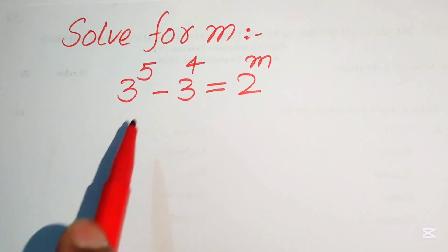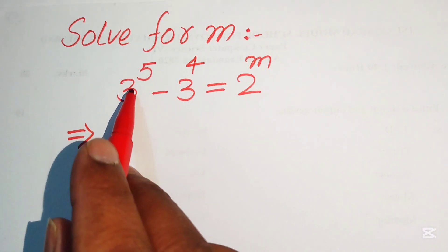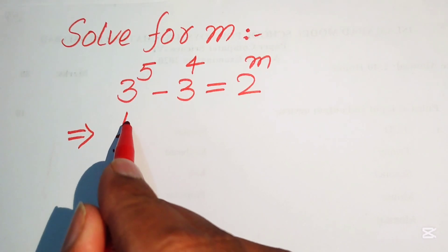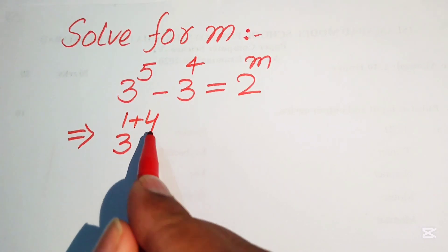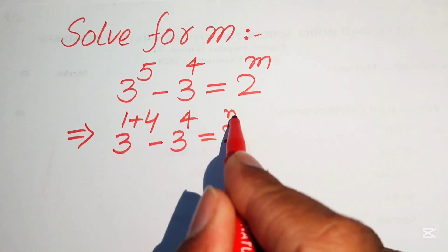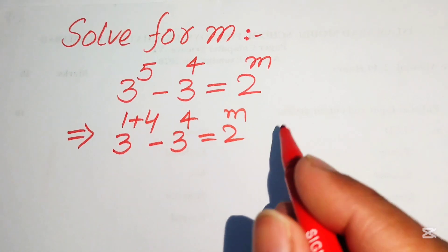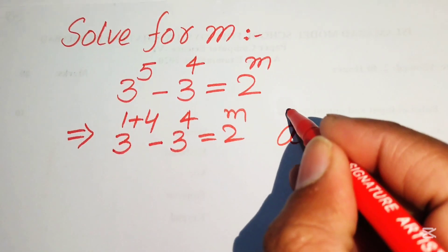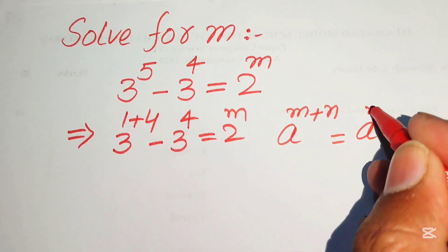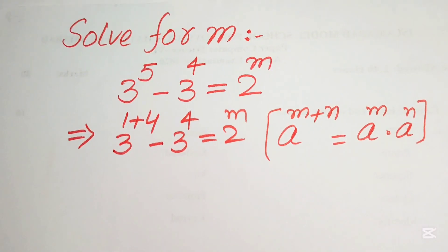We break the exponent of 3^5 and write it as 3^(1+4) minus 3^4, which equals 2^m. After that, we apply the exponential law: a^(m+n) equals a^m multiplied by a^n.